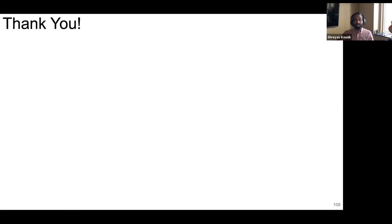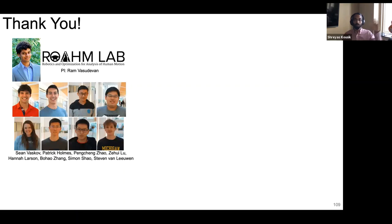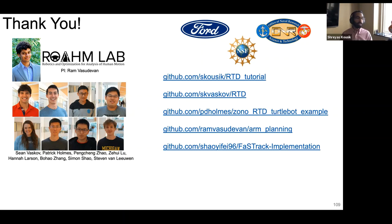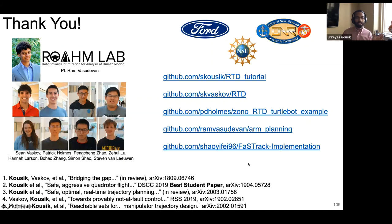That's everything I have for y'all, but I'm happy to answer questions. This is not a solo effort — I've had plenty of people in my lab working on these various projects and we've been blessed with funding to buy these robots. We also have a whole bunch of open-source code available online, including sums-of-squares reachability, zonotope reachability, and an implementation of the FaSTrack planner from Berkeley.